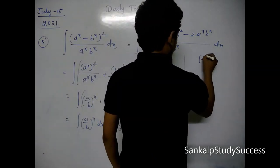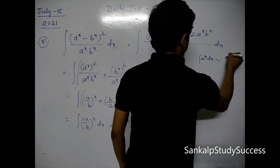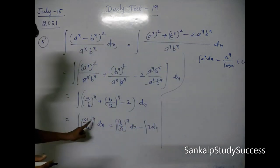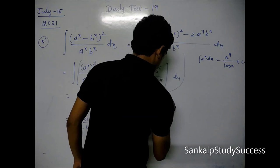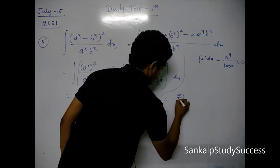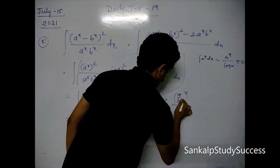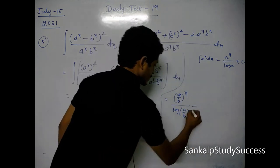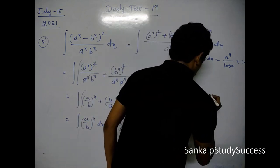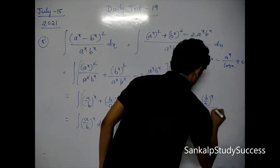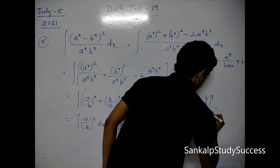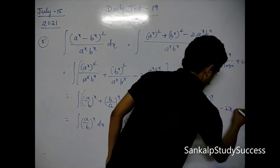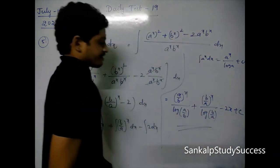Using the formula integral aˣ dx = aˣ / log a + c: the result is (a/b)ˣ divided by log(a/b), plus (b/a)ˣ divided by log(b/a), minus 2x, plus c. This is the final answer.